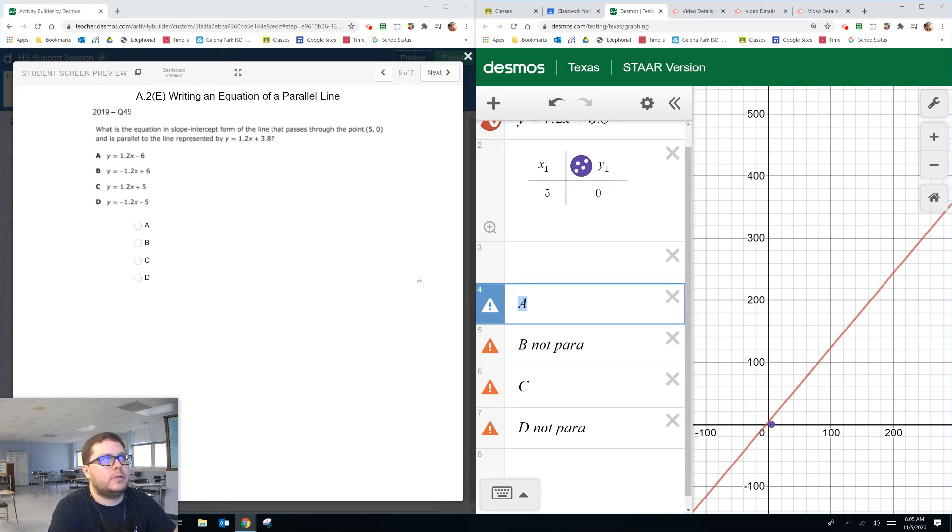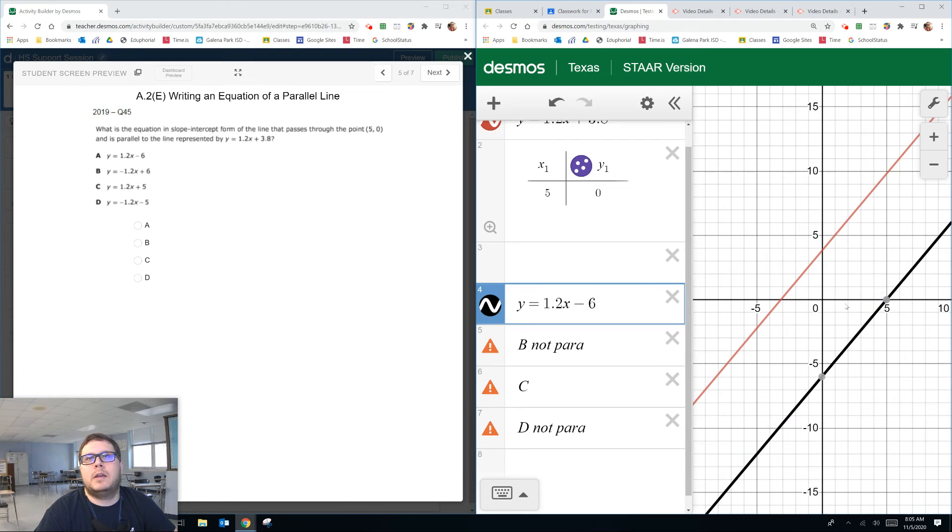So we're going to put in answer choice A now because we know that could be parallel, or that is parallel. But let's see if it goes through the point minus 6. I've got to zoom in on it. And I'm going to turn it on and off real quick just by clicking on that line right there. So I'm just turning it on and off to see if it goes through the point.